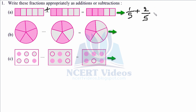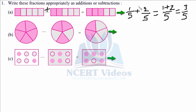So one over five plus two over five — that means one part out of five and two parts out of five — gives you three out of five. Taking LCM, which is five, we get one plus two equals three, so the answer is three over five. Pictorially, three parts are shaded out of five. That is what fractions are all about. In the first question, addition has been done.